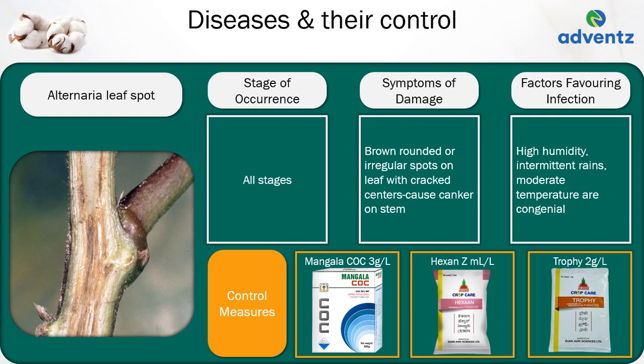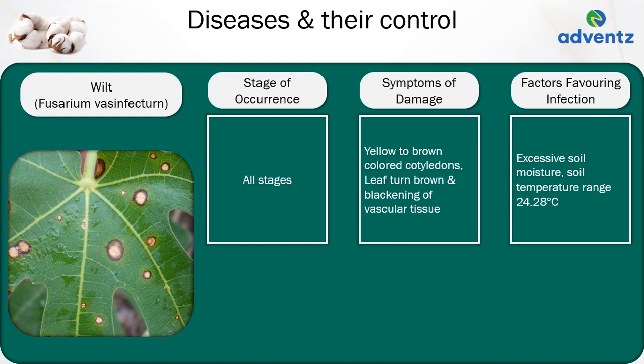The next disease is wilt. The causal organism is Fusarium vasinfectum. Wilt can occur at all stages. The symptoms of damage are yellow to brown coloured cotyledons, leaves turning brown, and blackening of vascular tissues. Excessive soil moisture and soil temperature ranging between 24–28°C are factors favouring wilt infection.